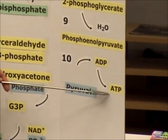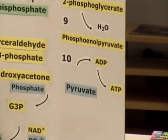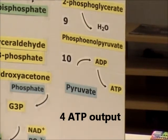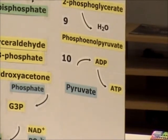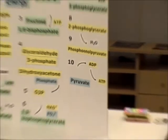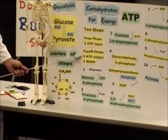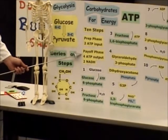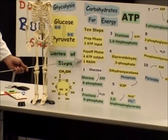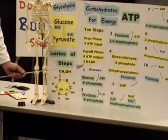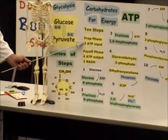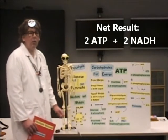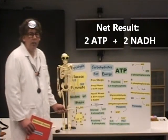So that means we started by putting in two ATP, but we get four ATP out. If you look at the prep phase and the payoff phase — yes, we put in two ATP, and in the end four ATP were output along with two NADH. So the net would be two ATP: four out minus two in, giving a net result of two ATP out and two NADH.